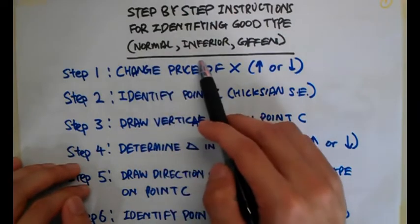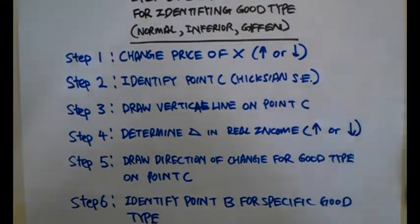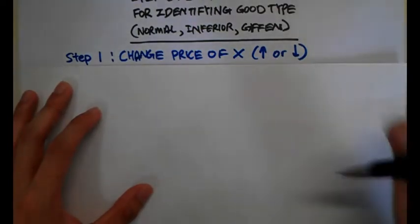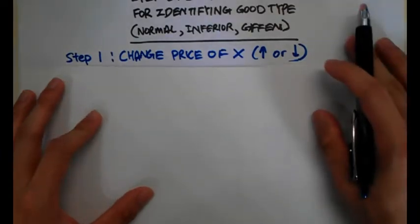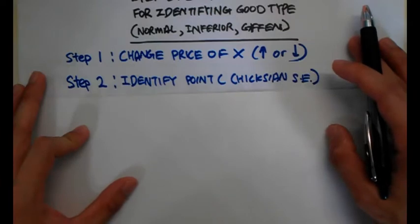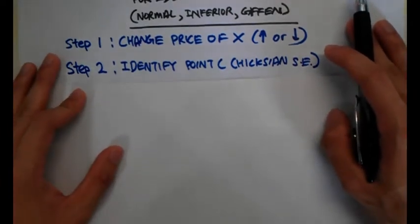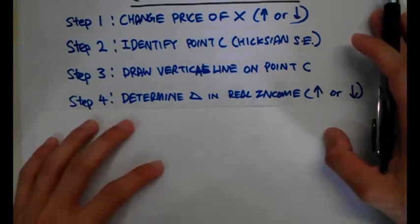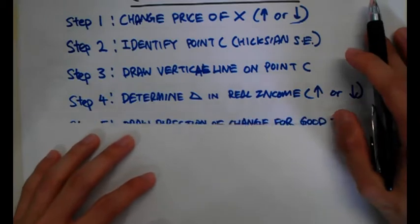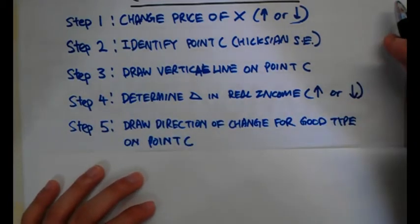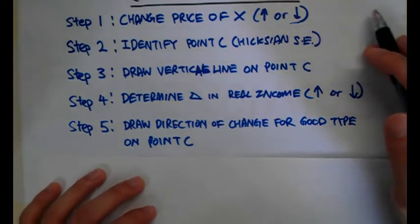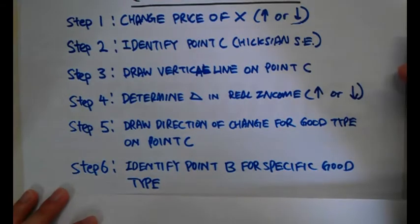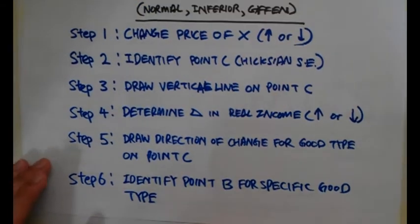Let's start with the step-by-step instructions on how to identify the good type — normal, inferior, and Giffen goods. Step one: we are going to change the price of X, either increase or decrease it. We'll stick with decreasing the price of X. Step two: we identify point C under the Hicksian definition of real income. Step three: we draw a vertical line on point C. Step four: we determine the change in real income — whether it has increased or decreased. Step five: draw the direction of change for the good type on point C. Step six: identify point B for the specific good type — whether it is normal, inferior, or Giffen.